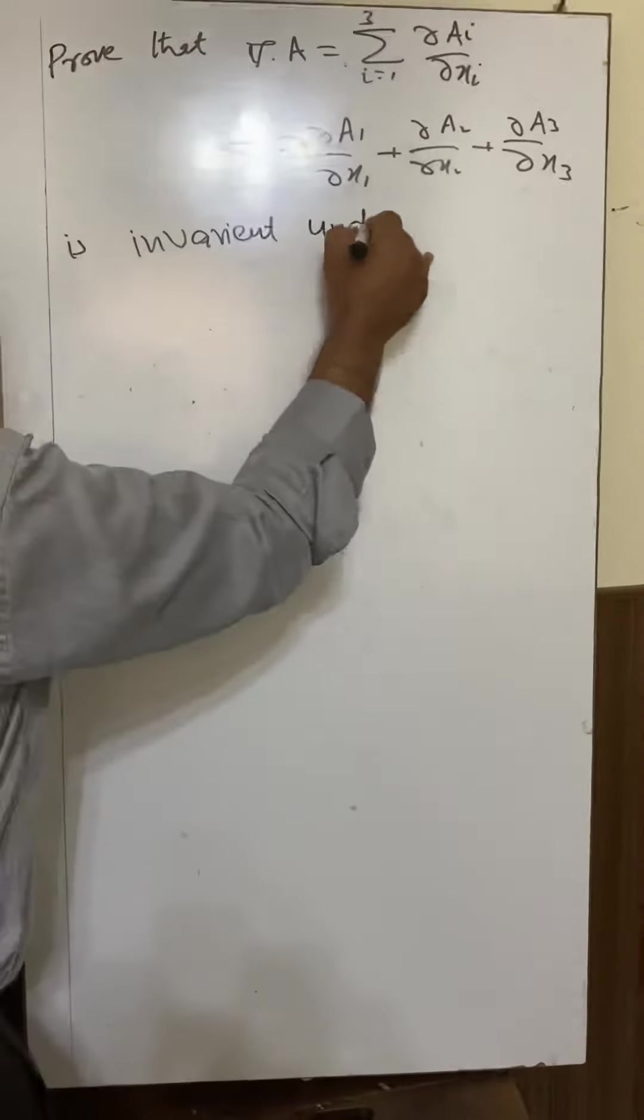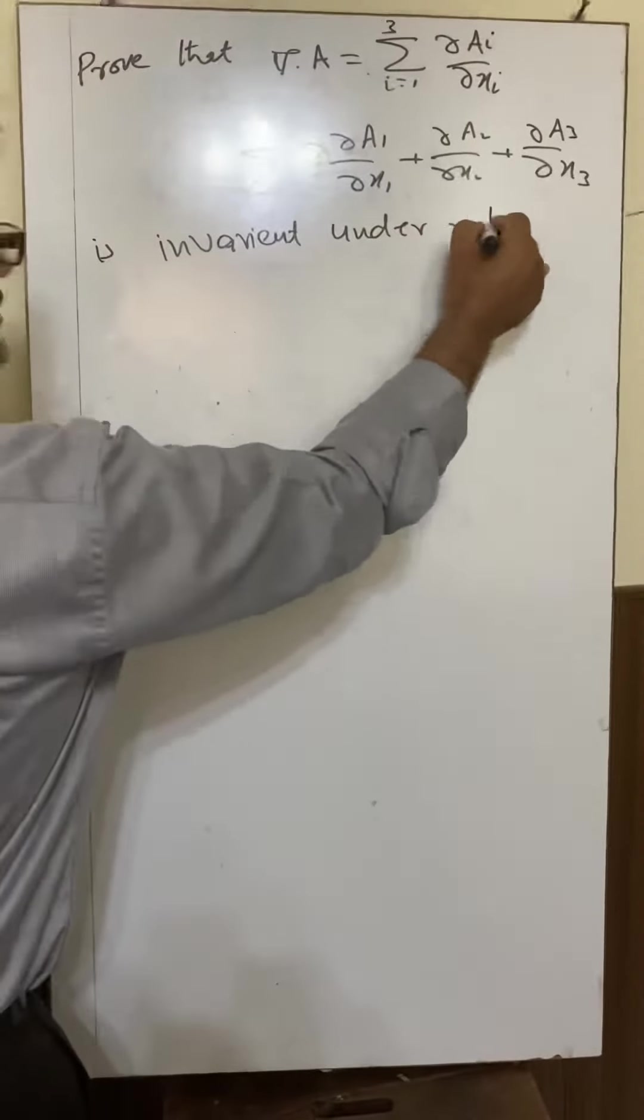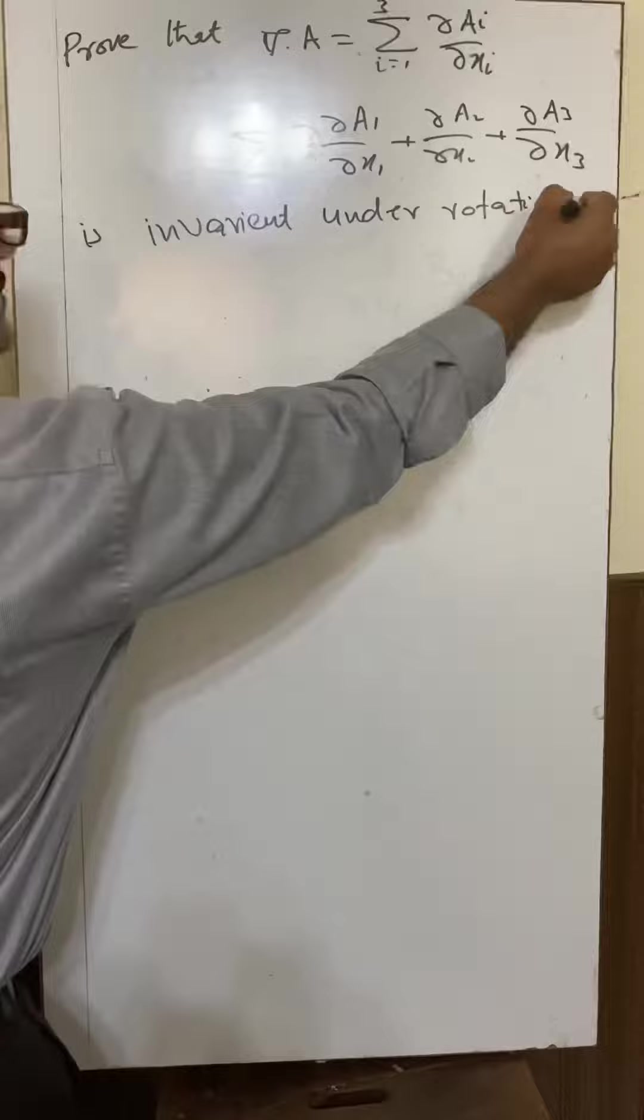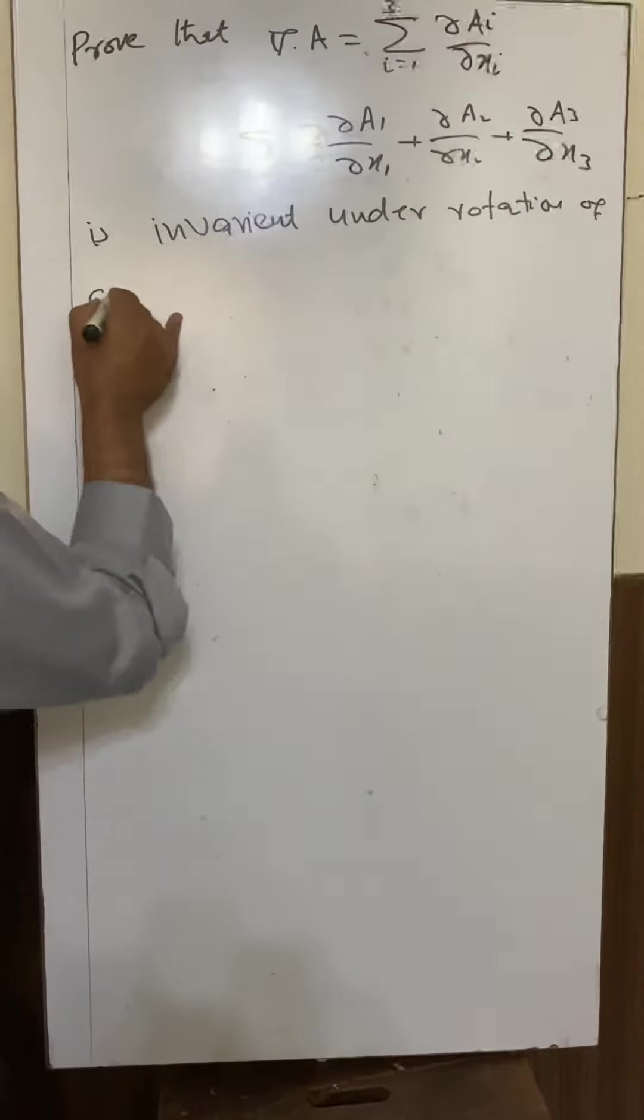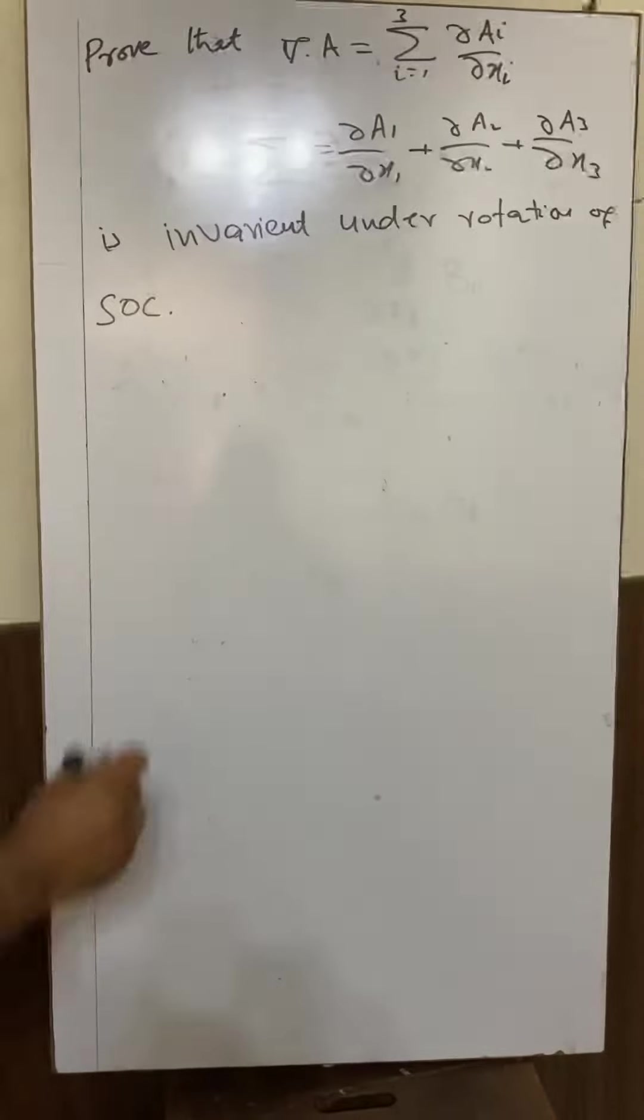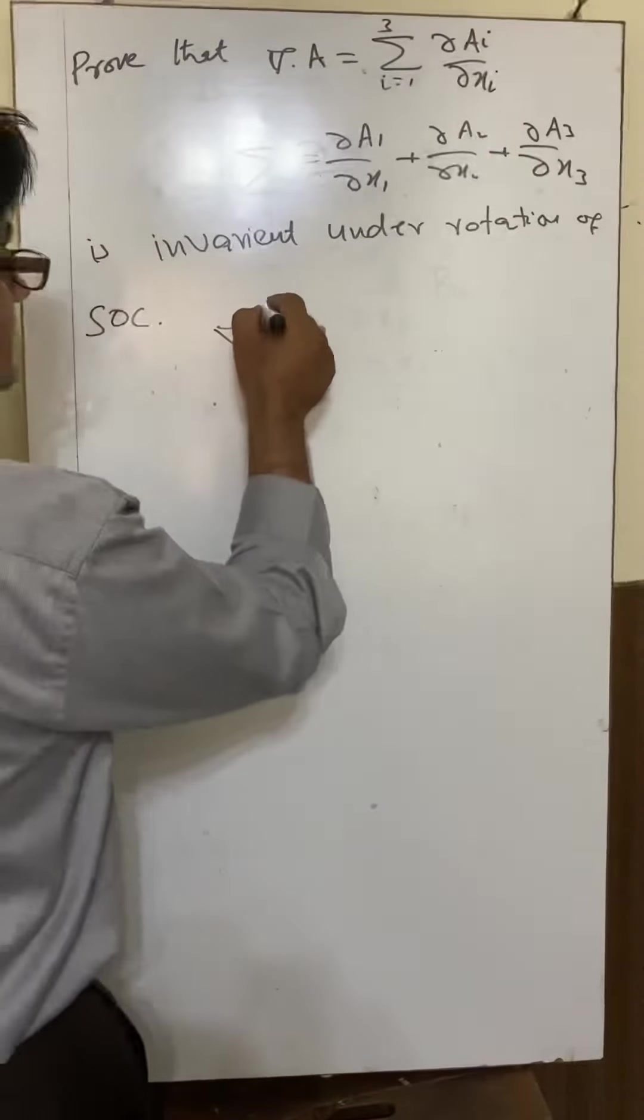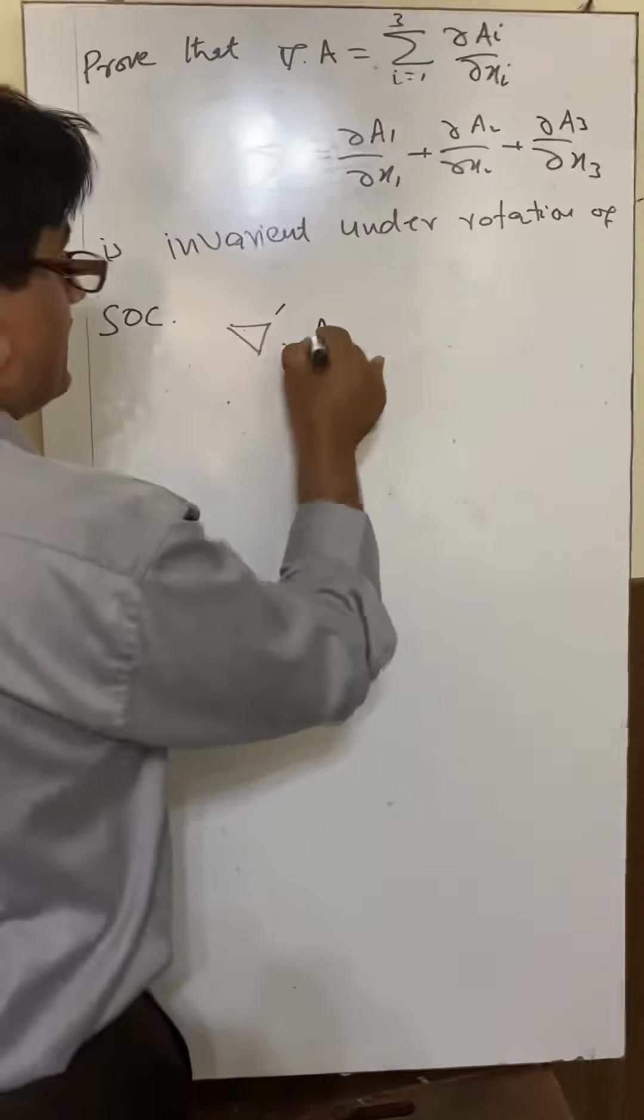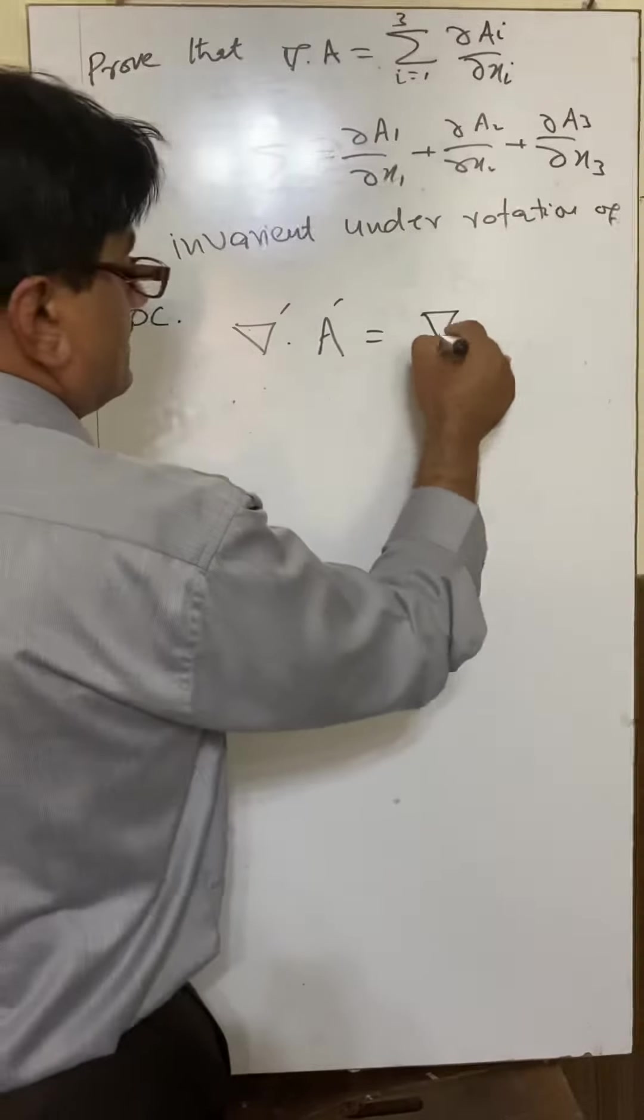under rotation of the coordinate system, which means we have to prove that del prime dot A prime equals del dot A.